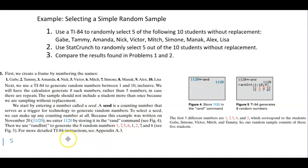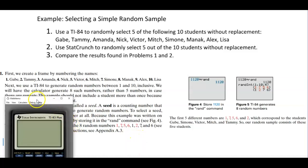Now the first thing we need to do is start by entering a number called a seed. A seed is a counting number that serves as a trigger for technology to generate random numbers. To select a seed we can make up any counting number at all. Because this example was written on November 20th, we're going to enter 1120 by storing it in the rand command.